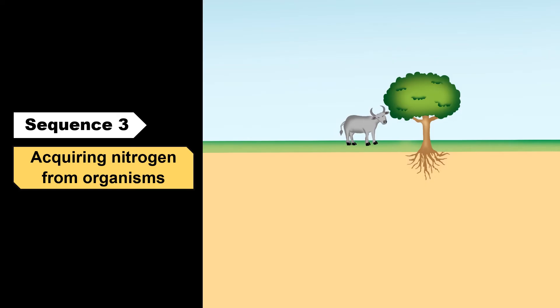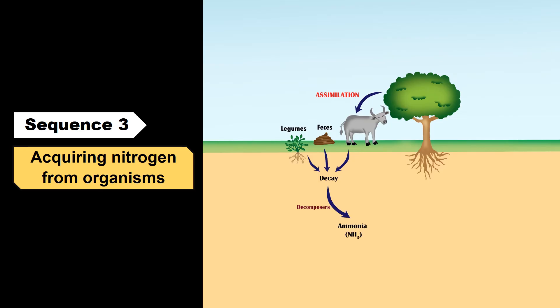Sequence 3 summarized: The carabao that assimilates nitrogen will die over time. Its body and waste, together with other dead plants and animals, will decay. Decomposers such as bacteria and fungi will convert the decaying matter into ammonia through ammonification. Some ammonia will be absorbed directly by the tree, and some will be converted into nitrates by nitrifying bacteria through nitrification. These nitrates will then be absorbed by the tree.